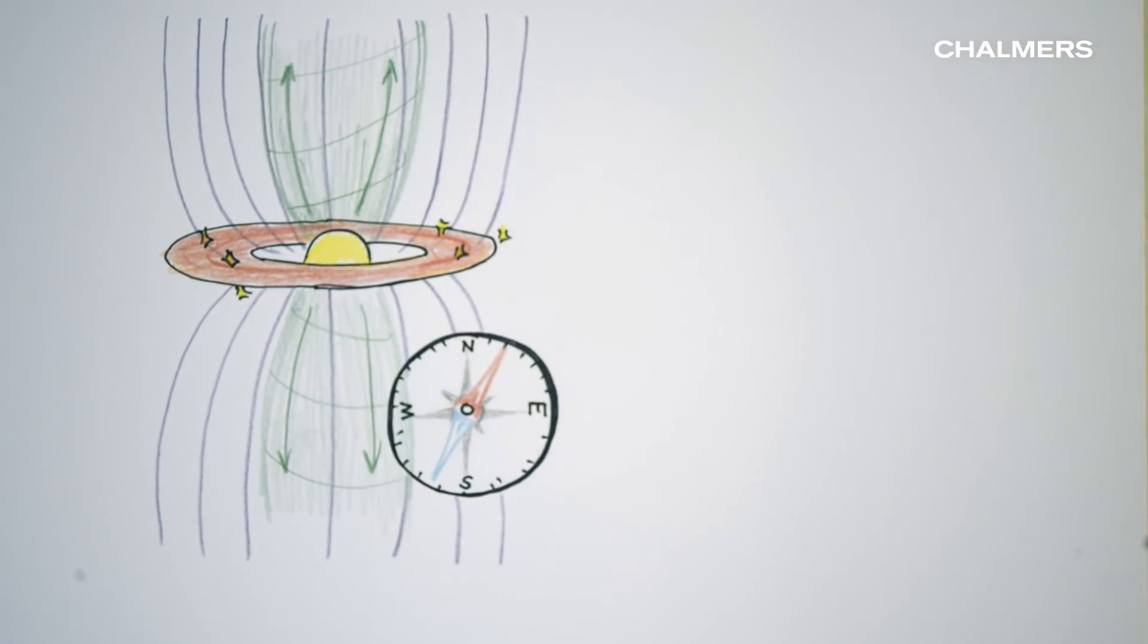Because the masers are all around the forming star, and each one contains information on the magnetic field.